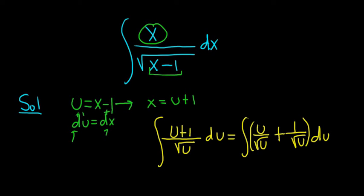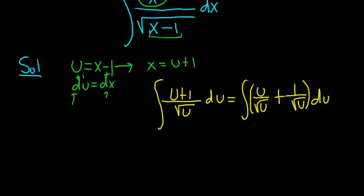In order to simplify this, we can replace the square root of u with u to the 1 half. So this is equal to the indefinite integral of u over u to the 1 half plus 1 over u to the 1 half, du.